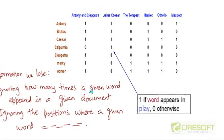We are ignoring how many times a given word appeared in a given document. We're just recording the presence or absence of a given word in a given document. We are not keeping track of how many times Brutus appeared in the play Antony and Cleopatra. All we care about is that this word is present in this document.